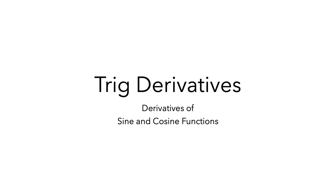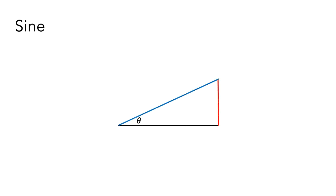In this video, I'll show you how to find derivative functions for sine and cosine functions. We usually start thinking about sine as a ratio in a right triangle, with the angle of interest having measure theta. Specifically, sine of theta is the ratio of the length of the side opposite theta to the length of the hypotenuse.